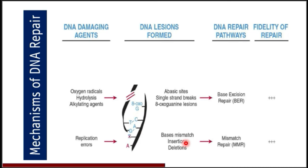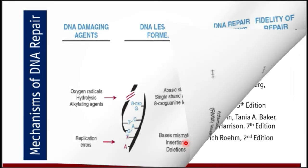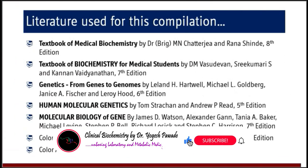To summarize, these are the DNA damaging agents, DNA lesions formed, and the possible DNA repair pathways with their particular fidelity rates. This was an overview of DNA damaging agents, possible DNA damages, and the mechanisms of DNA repair applicable to certain types of damage. In the next session, we will discuss different DNA repair processes and mechanisms in detail. Thank you very much.